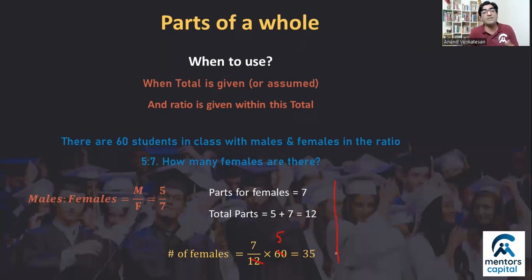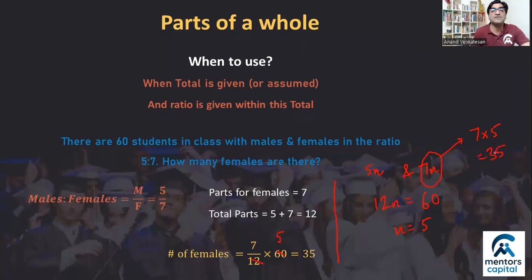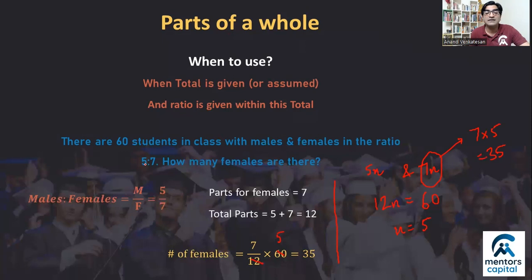An important point: you can also solve this without Parts of a Whole by assuming ratio variables 5N and 7N, then 12N = 60, so N = 5, and females = 7 × 5 = 35. But that involves 2–3 extra steps. If you want to directly get the value or percentage from a ratio, you can use Parts of a Whole directly — 7 out of 12 — and that fraction gives you the answer right away.